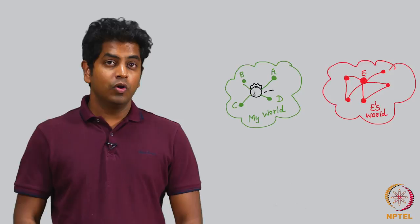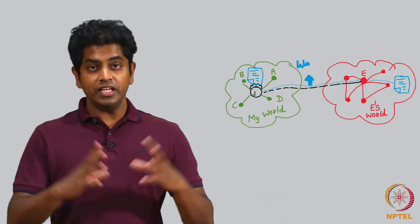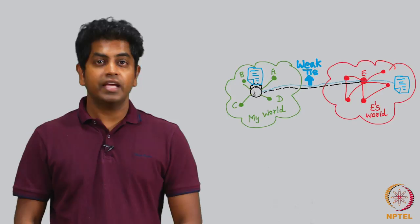So, E is the one who helps me get to know of things from his world which increases my sample space of information which A, B, C, D cannot give me.